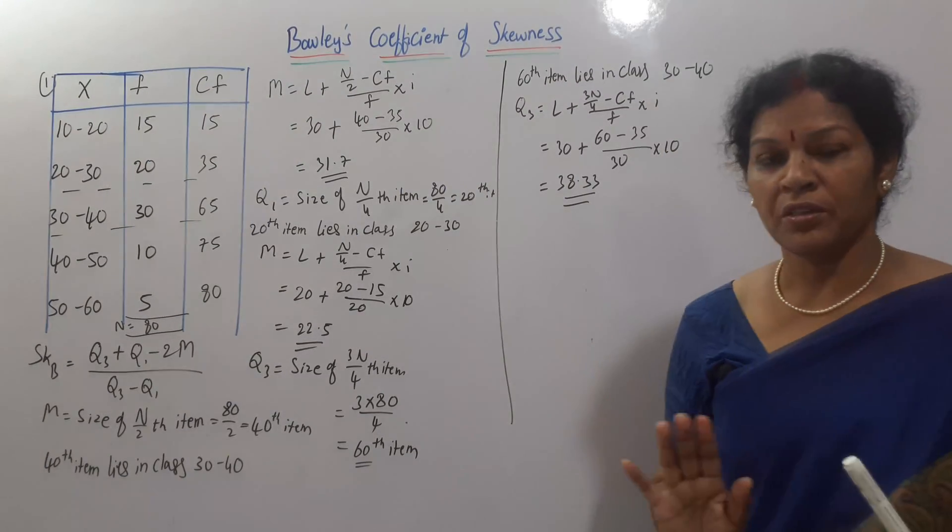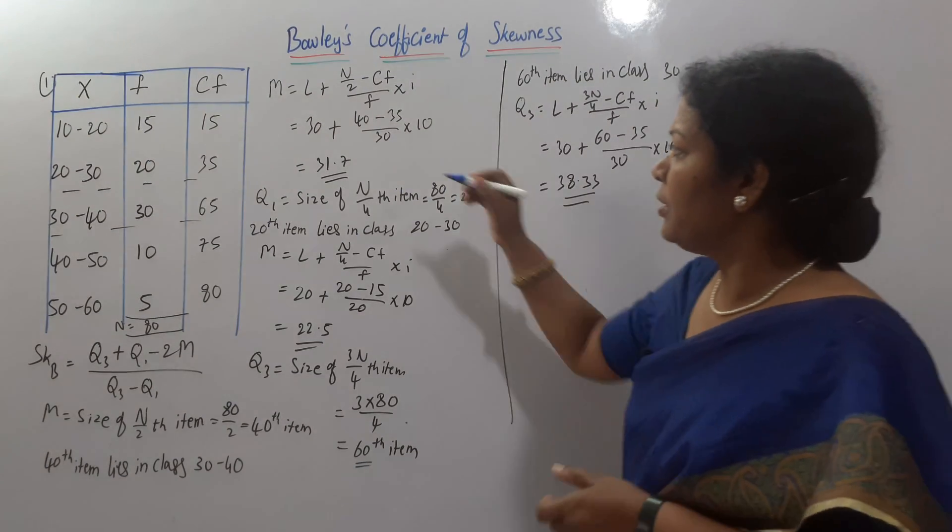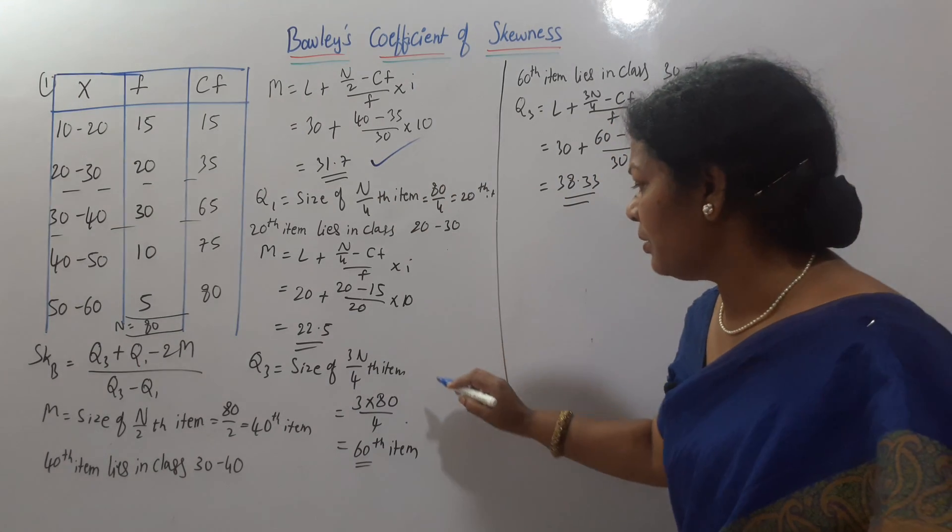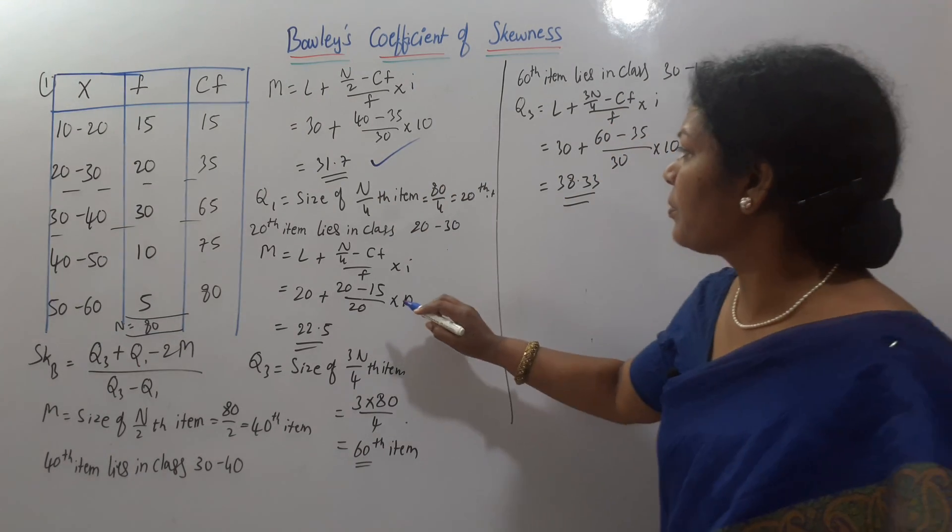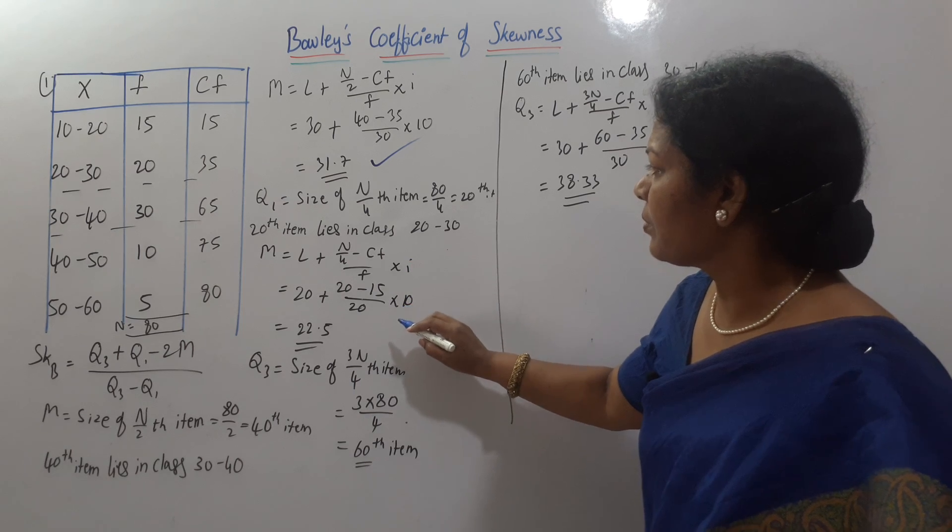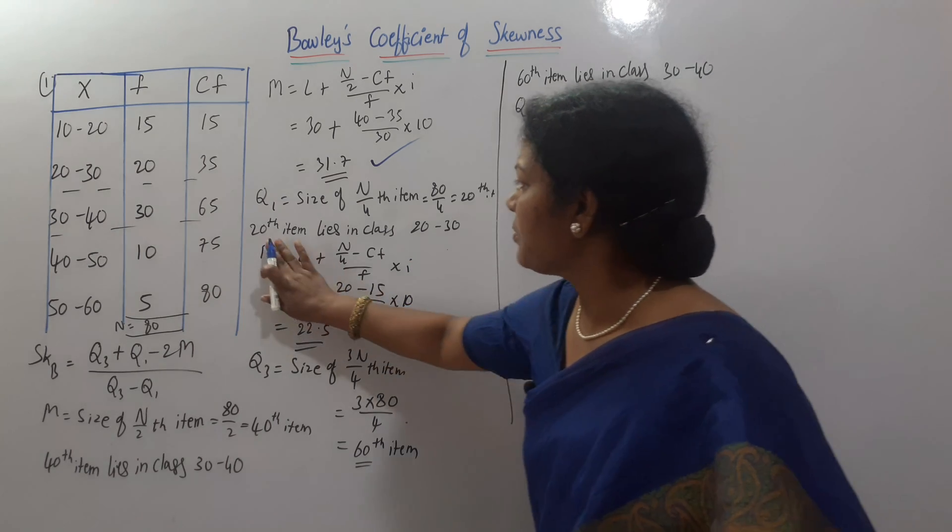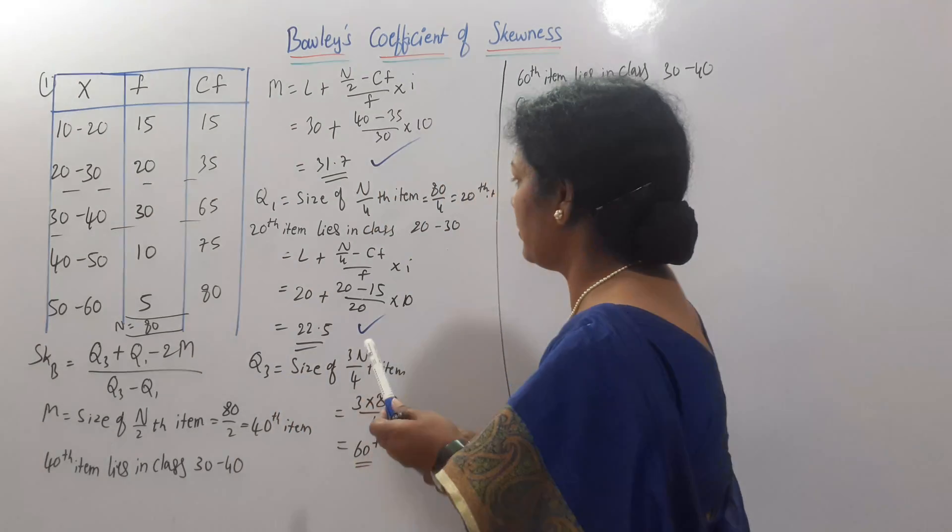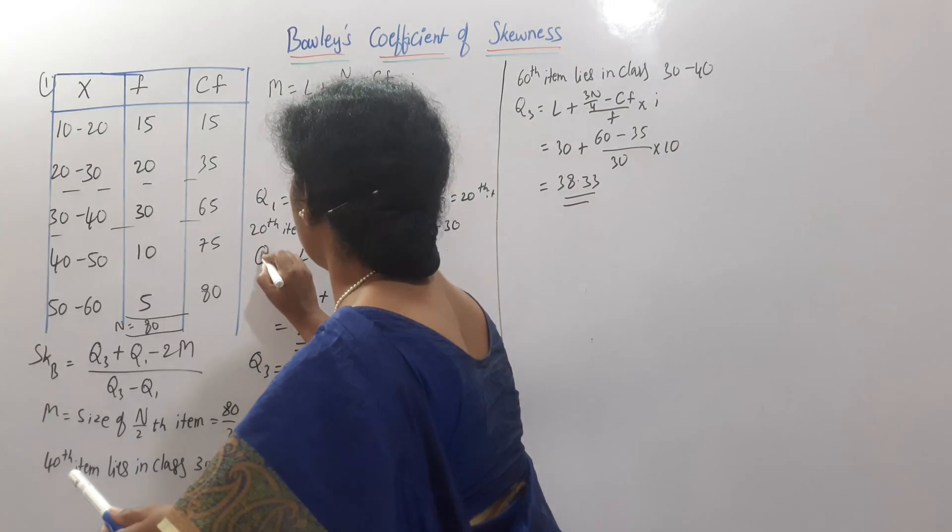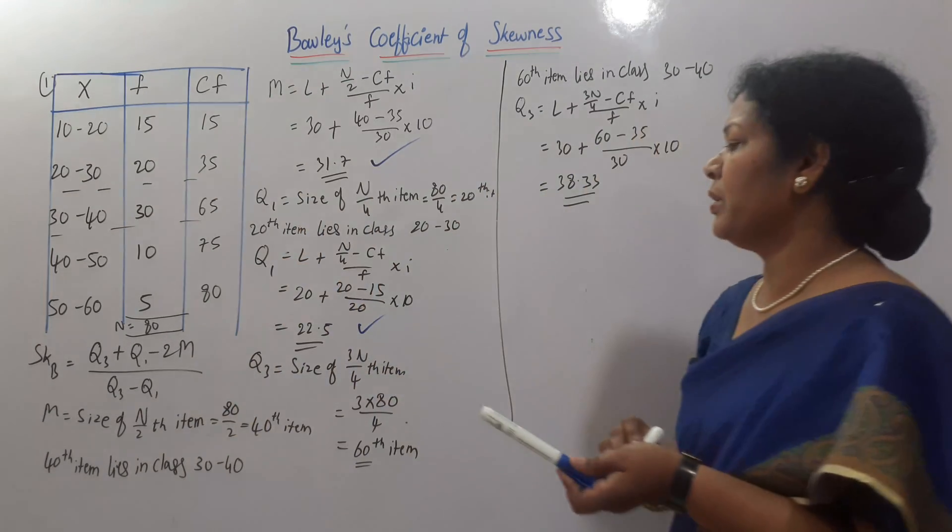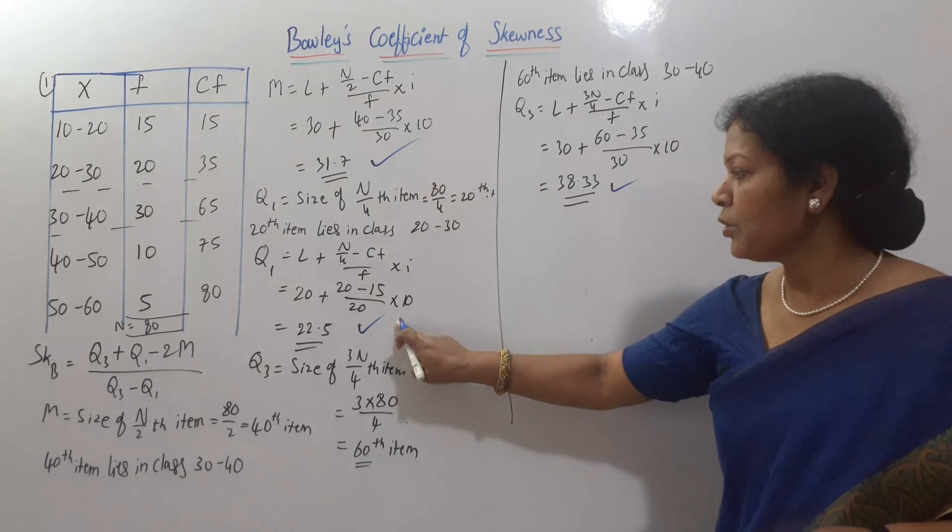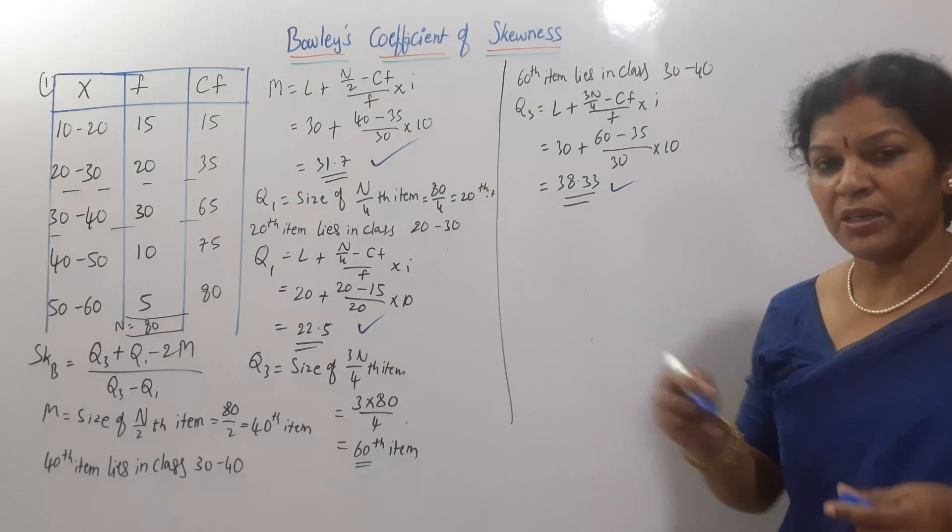What we want? Median. Median is this one. You got it. Next, Q1. Where is Q1? This is Q1. By mistake, I have written mid M. This is actually Q1. Q1. And Q3 we need. Q3 is this one. Median Q1, Q3. Apply it in the formula.